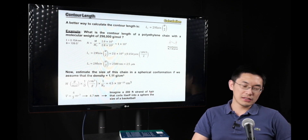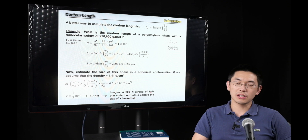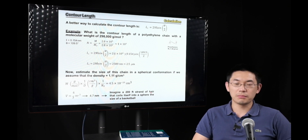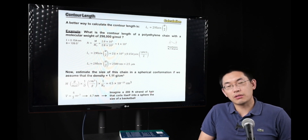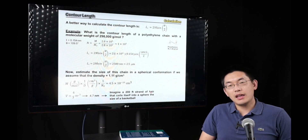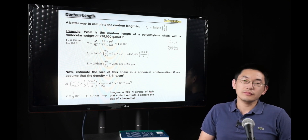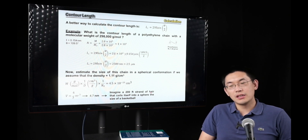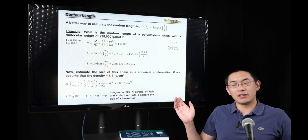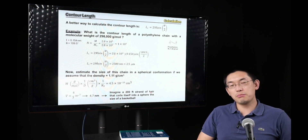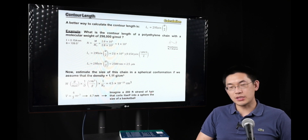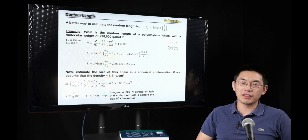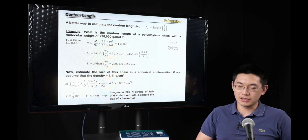Going back to a more realistic state, chains form something called a Gaussian coil, resembling how a polymer chain behaves when dropped to the ground in a random coil state. This coil size, measured by end-to-end distance, would be roughly 15 nanometers — bigger than the compact ball but not as large as the contour length. This is the conformation most polymers adopt in plastic products without special treatment.